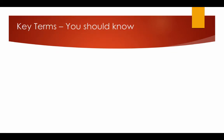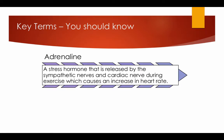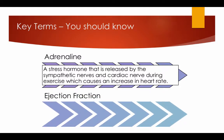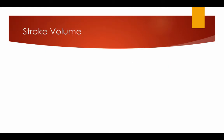Key terms you should know. Adrenaline: a stress hormone that is released by the sympathetic nerves and cardiac nerve during exercise, which causes an increase in heart rate. Ejection fraction: the percentage of blood pumped out by the left ventricle per beat.